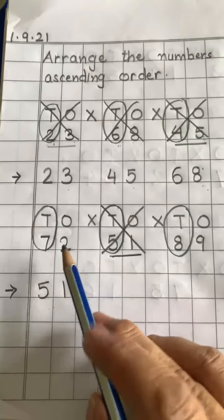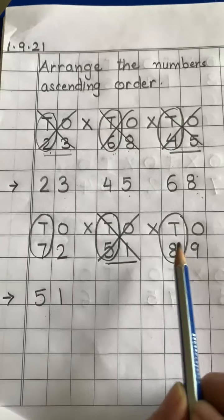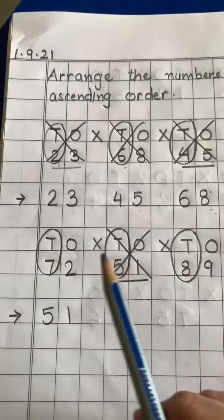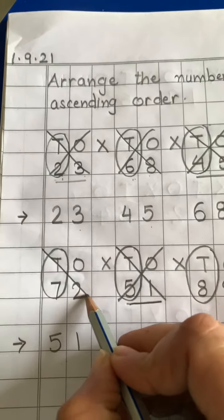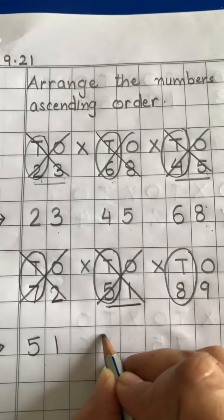Now, abh amare paas two numbers bachy hai. Seventy two and eighty nine. Ab bitao seven or eight me koon small hai? Seven. Yes. So, cross number seventy two. Write it here.